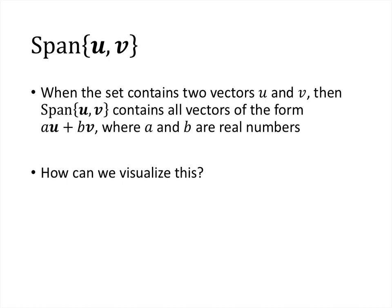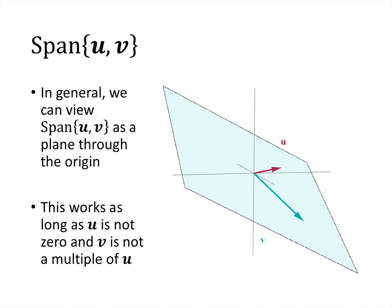Now let's consider the case when we have two vectors. So when we have two vectors, we have two possible scalars, one multiplied by u, and one multiplied by v, and then we add together the results. So this is everything that looks like au plus bv, where a and b are real numbers. This will, in general, be visualized as a plane through the origin. Now this works as long as u is not 0 and as long as v is not a multiple of u. We'll talk about those special cases a little bit later.